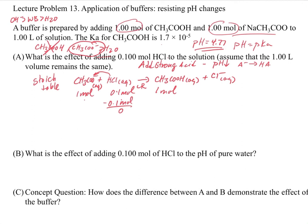If we had added hydroxide instead, it would have reacted with the acetic acid and removed it. Whether you add a strong acid or strong base, having both the weak acid and its conjugate base takes care of it. This also illustrates buffer capacity — with one mole of acetate and one mole of acetic acid, this buffer can handle up to roughly half a mole or more. If you added two moles of HCl, you'd exceed buffer capacity. But here we're adding just 0.1 moles, well within capacity.